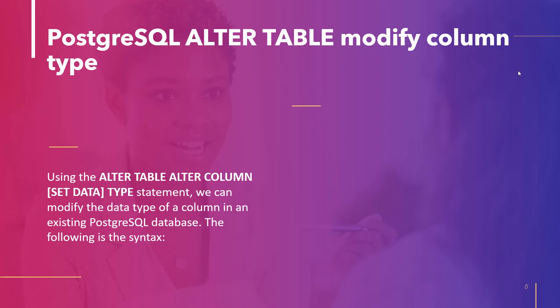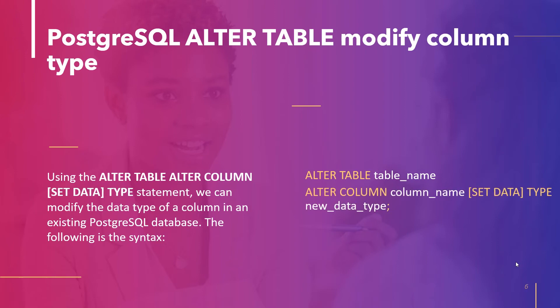We can change the data type of a column in an existing table in PostgreSQL by using the ALTER TABLE, ALTER COLUMN, SET DATA TYPE statement. The syntax is: ALTER TABLE, TableName, ALTER COLUMN keyword, column name, SET DATA TYPE, new data type. Note that SET DATA TYPE and TYPE are equivalent — we can use either of them.